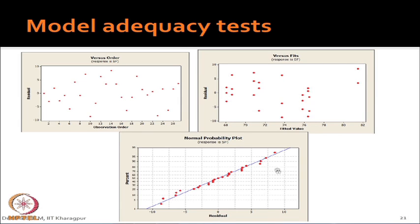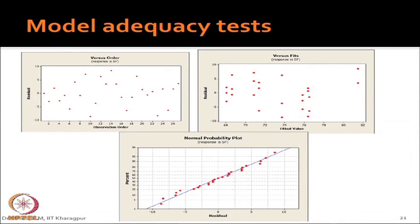Now we must go for model adequacy testing. First, construct the normal probability plot of residuals — if it is nearly a straight line, the normality assumption holds. Second, plot residuals versus observation order to check independence — a random, haphazard pattern indicates no serial dependence. Third, check variability across groups (residuals versus fitted values) — if there is no strong pattern, we have approximately equal variance.